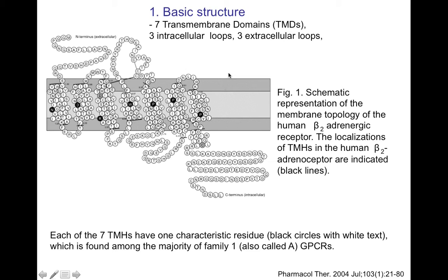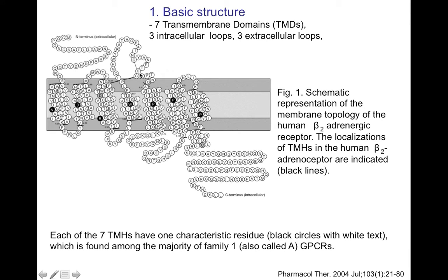This is the basic structure of a GPCR. They mainly have seven transmembrane domains — one, two, three, four, five, six, seven — three intracellular loops, and three extracellular loops. This is another schematic representation and you can see the seven transmembrane alpha helices, the intracellular loops, and the extracellular loops. The GPCR is embedded within the lipid bilayer of the plasma membrane.